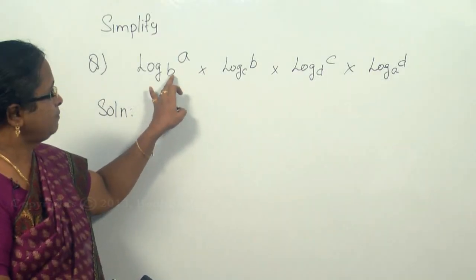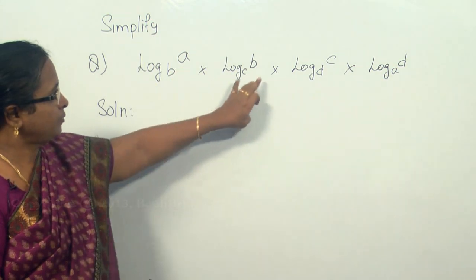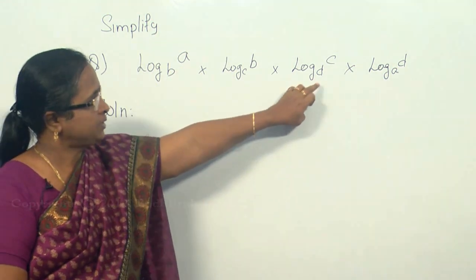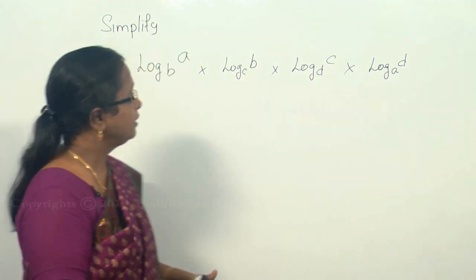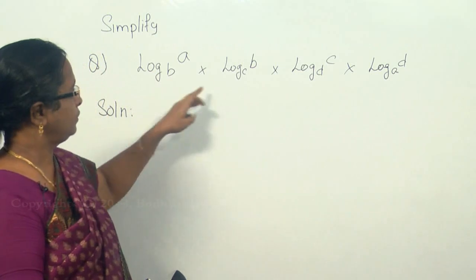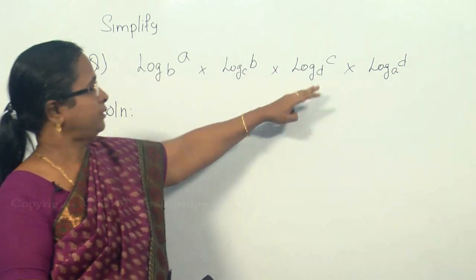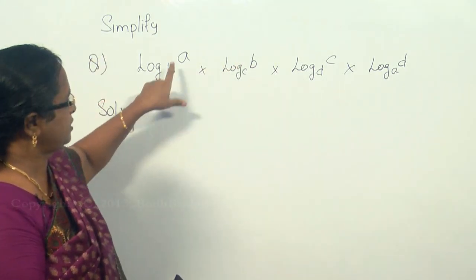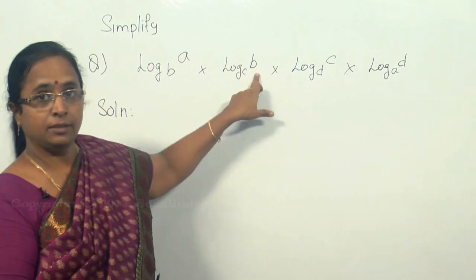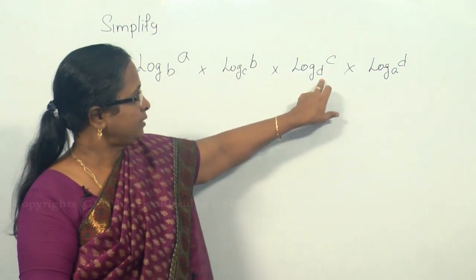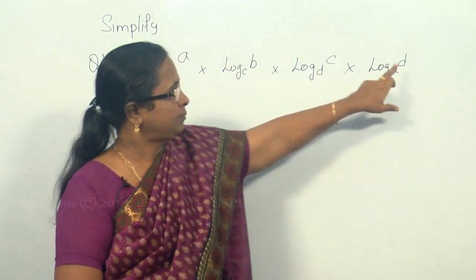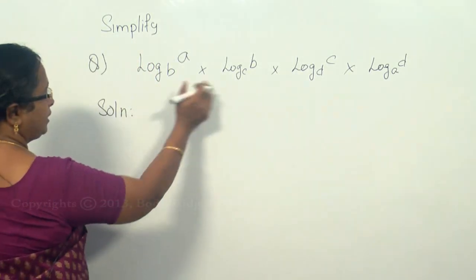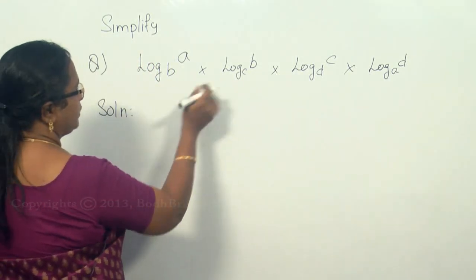We have log a base b, into log b base c, into log c base d, into log d base a. Here all the bases are different, but somewhere it is common — like here the base is b and the number is b. Similarly, here the base is d and the number is d. So we can combine these things by making this a common base.